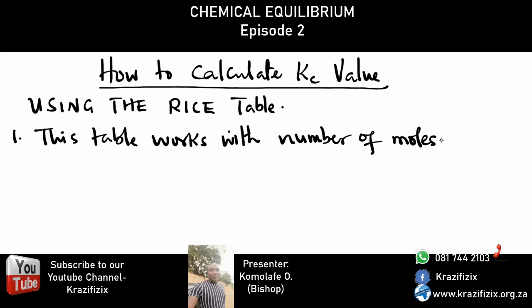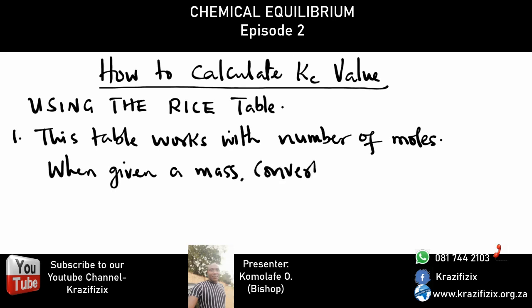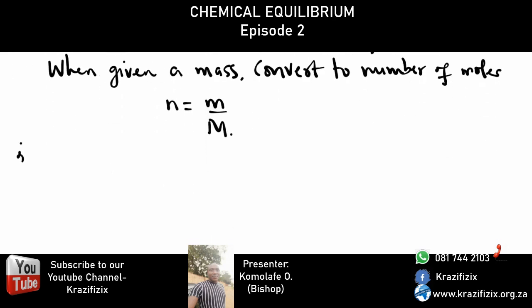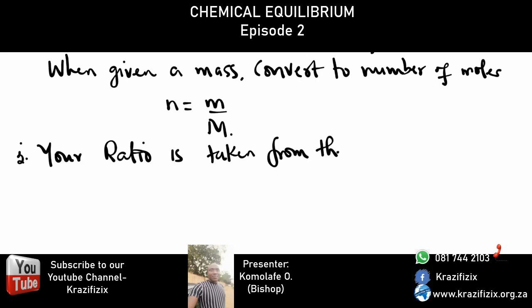When given a mass, convert to number of moles using: moles = mass over molar mass. Number two: your ratio is taken from the coefficients of balancing — we will explain this when we look at an example.